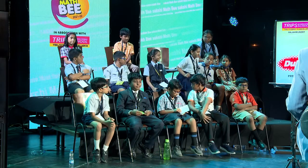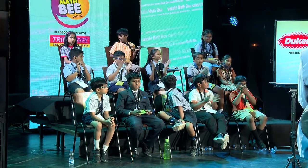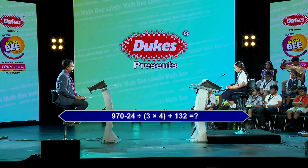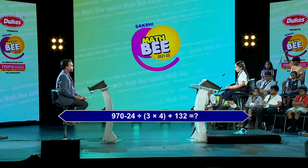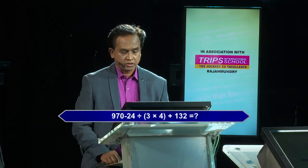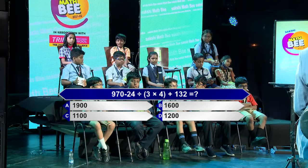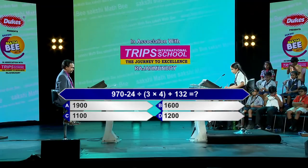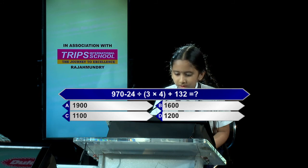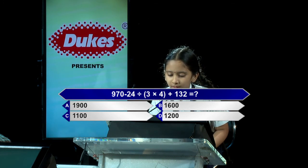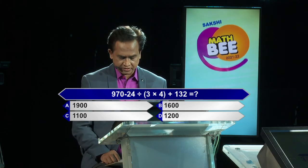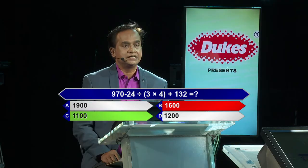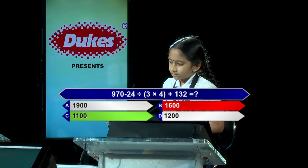May I call the next candidate, Oviya T from Chirik International School. 970 minus 24 divided by 3 into 4 in bracket plus 132 is equal to — options: A-1900, B-1600, C-1100, D-1200. Contestant answers option B-1600. Kindly lock option B-1600. Option B is incorrect. Option C-1100 is the correct answer. Better luck next time.